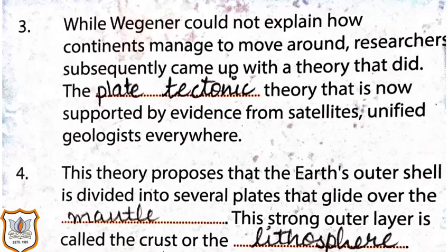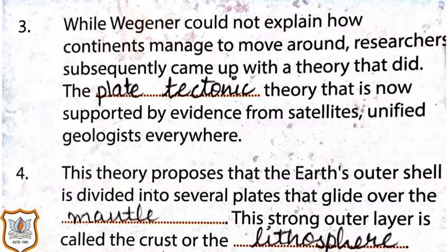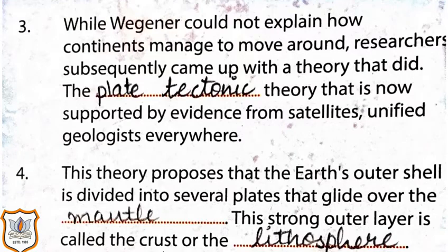Third, while Wegener could not explain how continents managed to move around, researchers subsequently came up with a theory that did — the plate tectonic theory — that is now supported by evidence from satellites and unified geologists everywhere. Fourth, this theory proposes that the earth's outer shell is divided into several plates that glide over the mantle. This strong outer layer is called the crust or the lithosphere.